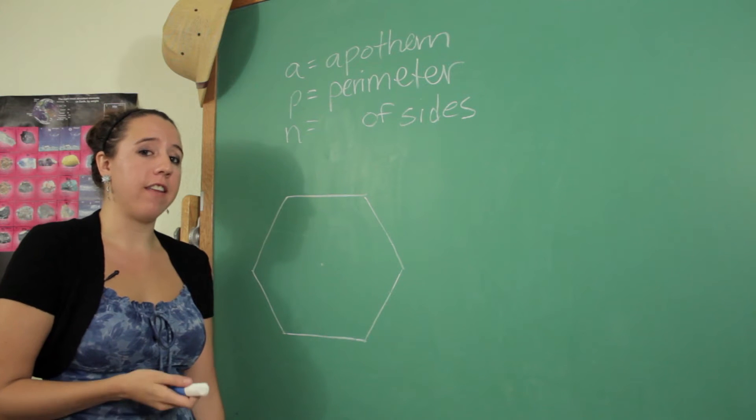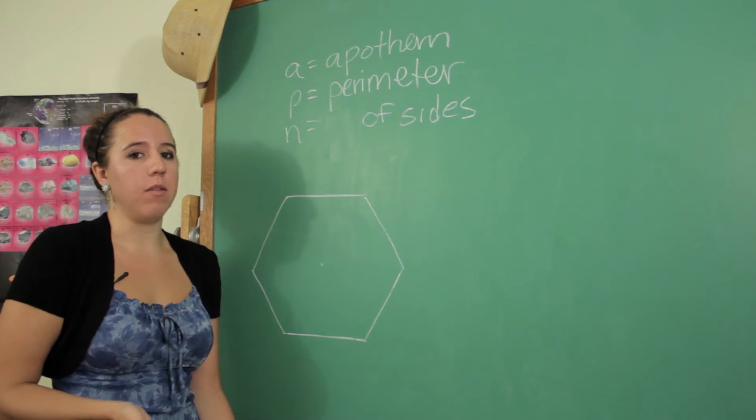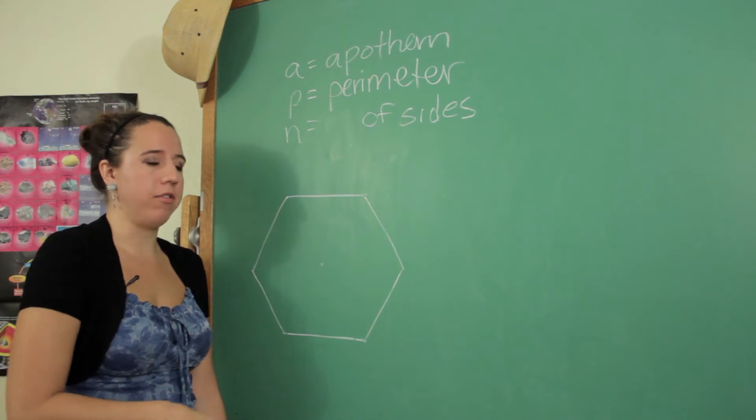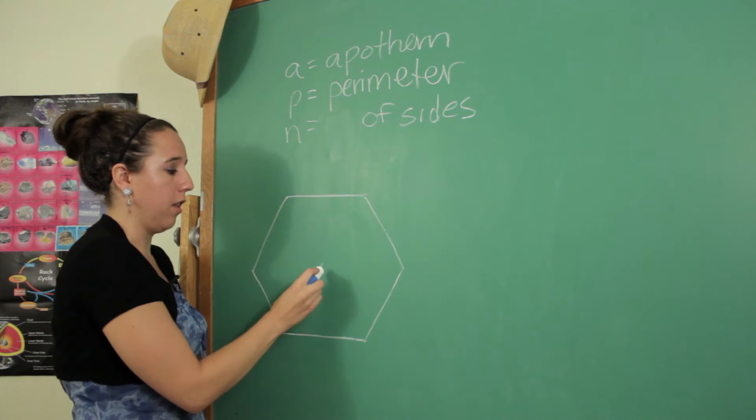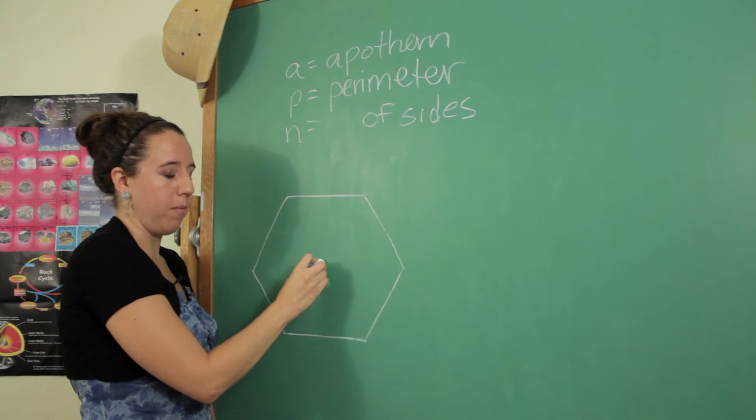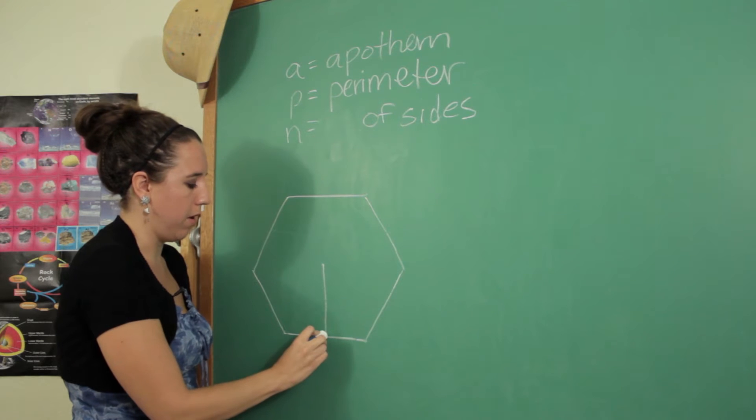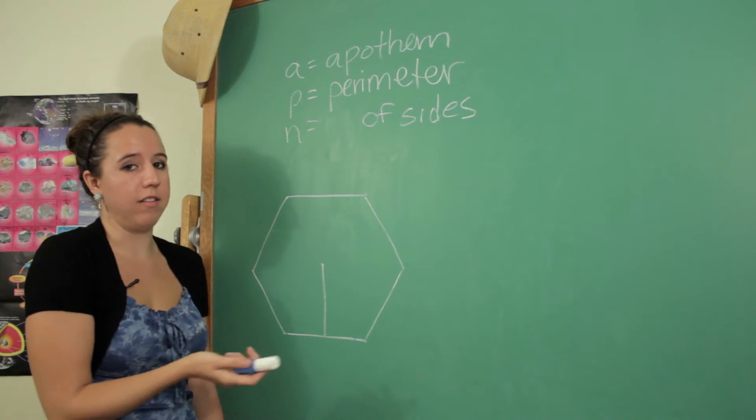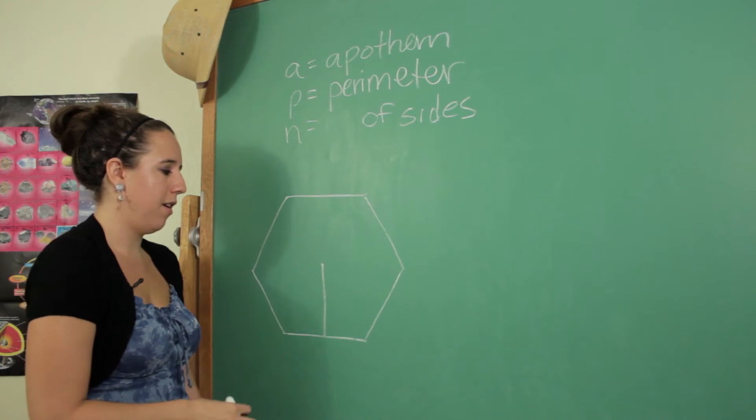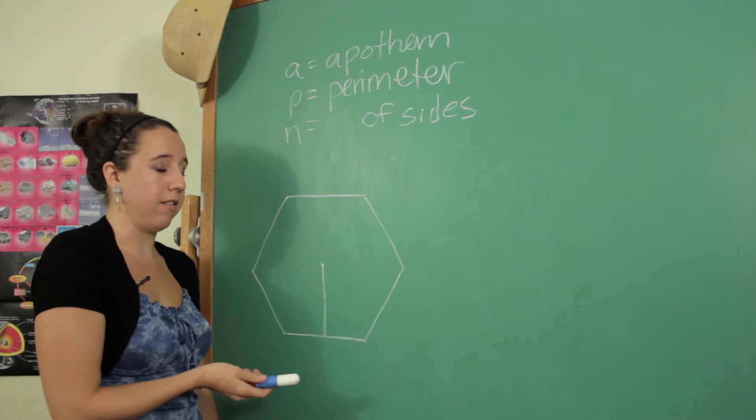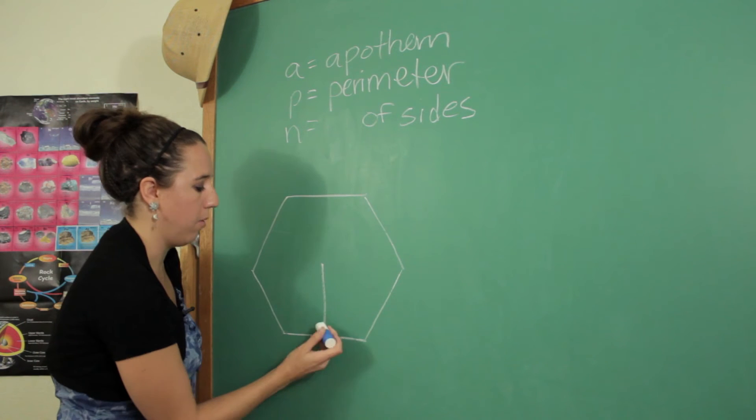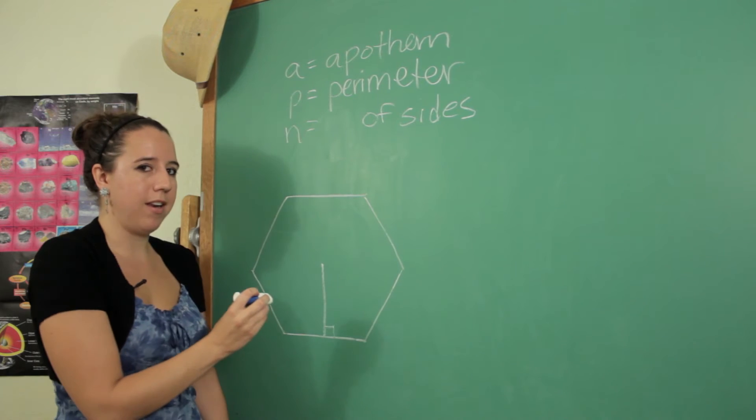So let's start by defining the apothem. It's not a word that you hear a lot every day even in geometry, but it's basically just going to be a line drawn from the center of your polygon to the middle of one of the sides. It doesn't matter which one because they're all the same, and for that reason because of the symmetry this line and this line will always be perpendicular.